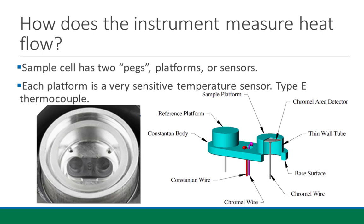The image on the right shows a diagram of the inside of these platforms. The junction of the two different metals is where temperature sensing takes place. In the cross-section of the peg, there is a chromel area detector fused to the constantan body, which is the bluish part. Where the chromel area detector and the sample platform are fused together is where the measurement occurs — it can measure temperature over that whole area. This happens at both pegs separately, and two more wires in the middle measure heat flow between the two platforms.